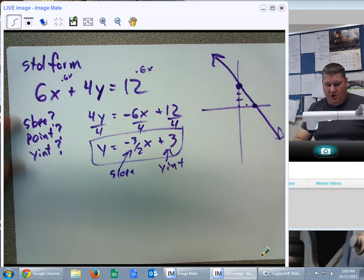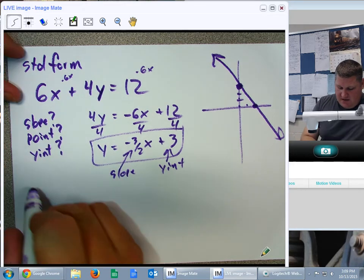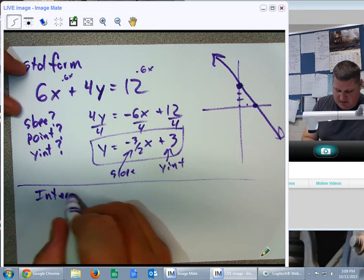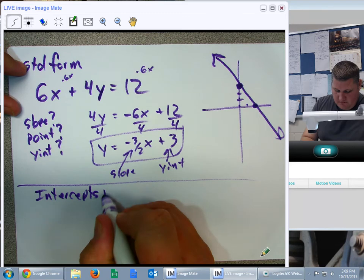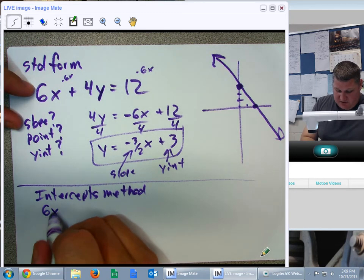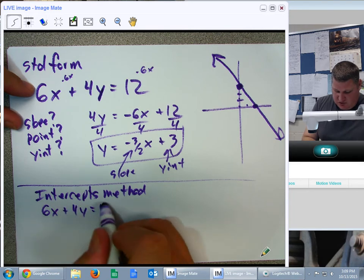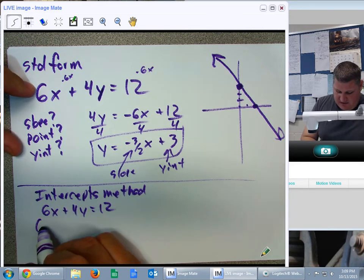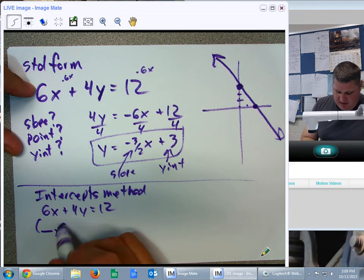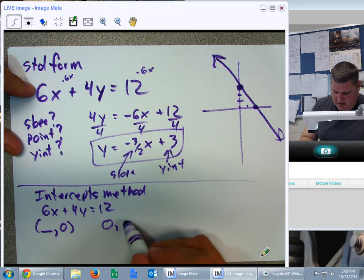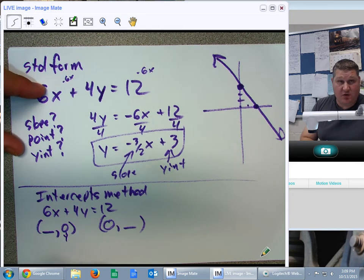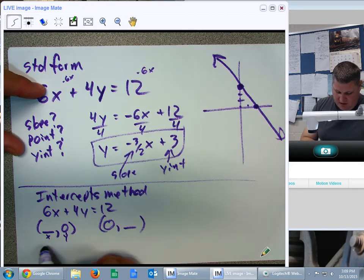You could have also used a different type of graphing here. For standard form, a lot of times we'll use the intercepts method. It's not a form of a line. It's just a way of graphing lines. So, 6x plus 4y equals 12. And it's going to be finding the intercepts. So, where does it cross here? Where does it cross here? It's going to be blank, 0, and 0, blank. This means we're going to plug 0 in for y, because that's the y part of the point, to find the x bit.